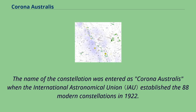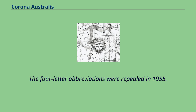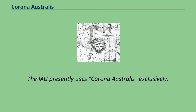The name of the constellation was entered as Corona Australis when the International Astronomical Union established the 88 modern constellations in 1922. In 1932, the name was instead recorded as Corona Australis when the IAU's Commission on Notation approved a list of four-letter abbreviations for the constellations. The four-letter abbreviations were repealed in 1955, and the IAU presently uses Corona Australis exclusively.